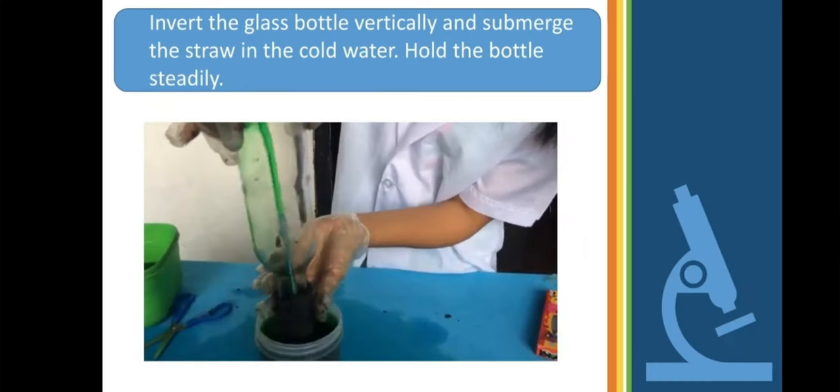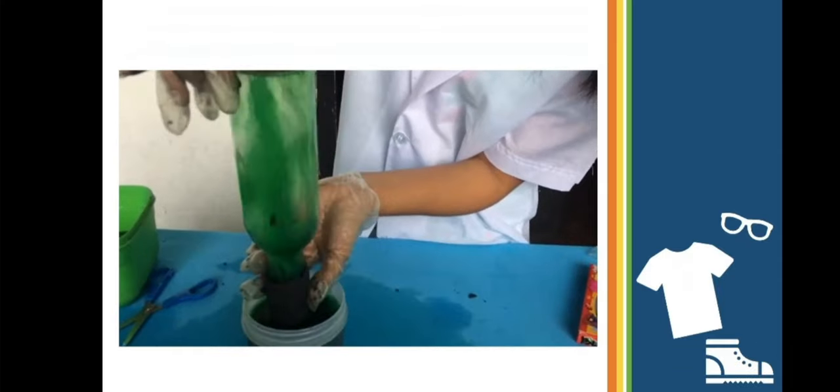After we submerge the straw in the cold water, this should have happened. As you see in the picture, there is a gush of water. Let us tackle why does this reaction happen?